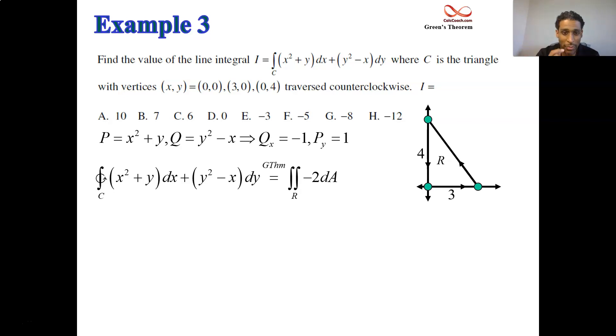Whenever qx minus py is a constant, what you can do with that constant is pull that constant out because the symbol double integral over r dA with a 1 in the integrand represents the area of the region. And this is a triangle. We don't have to use calculus to find that area. 1 half the base times the height. So the area is 6, and the answer to the question, negative 12.